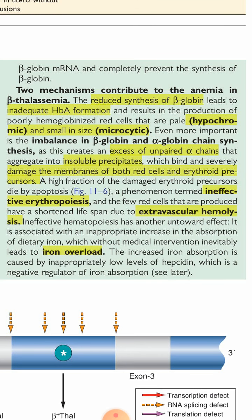Two mechanisms contribute to anemia in beta thalassemia. First, reduced synthesis of beta globin chains means no hemoglobin A is formed, so red blood cells are light in color and small in size — resulting in hypochromic microcytic anemia. Second, unpaired alpha globin chains form insoluble precipitates that attach to red blood cell membranes, weakening them and causing extravascular hemolysis. There is also iron overload due to excessive absorption from the GI tract.